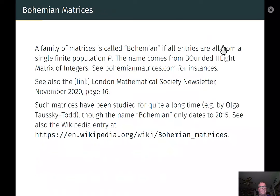So a family of matrices is called Bohemian if all entries are from a single finite population, which we'll call P. The name comes from Bounded Height Matrix of Integers, and see bohemianmatrices.com for instances. See also the November 2020 London Math Society newsletter where we made the cover. Such matrices have been studied for quite a long time, for example by Olga Towski Todd, although the name Bohemian only dates to 2015.